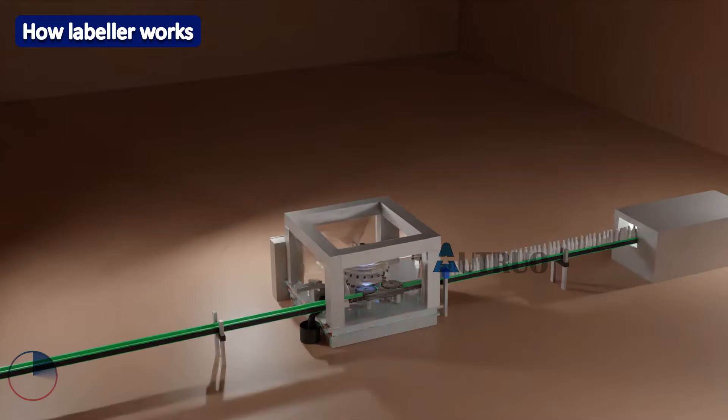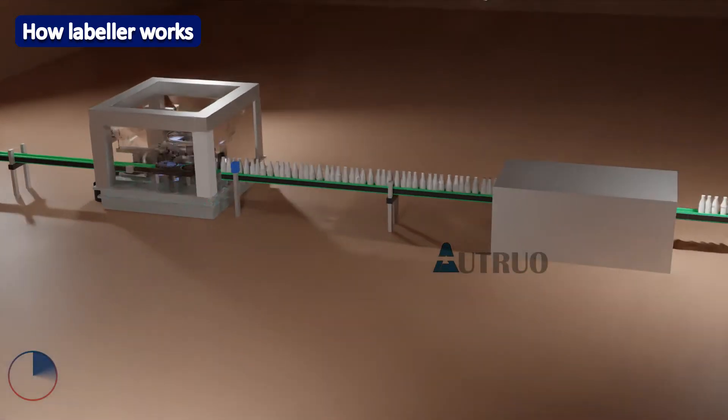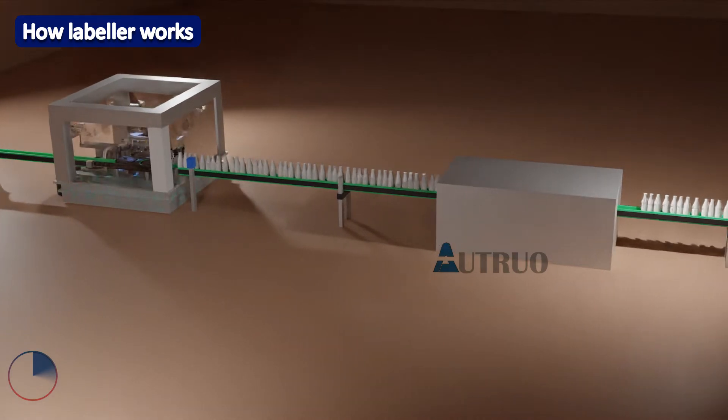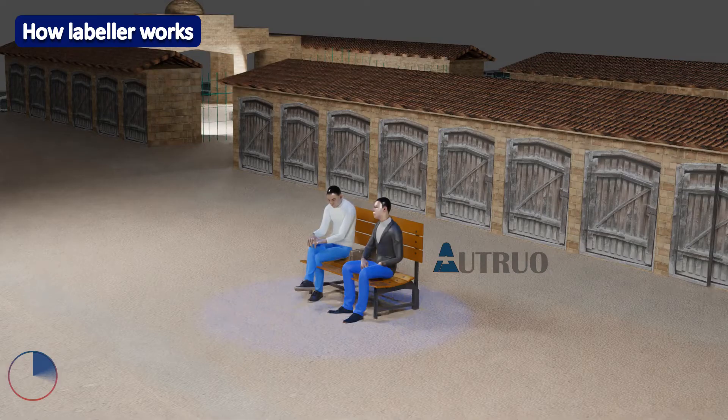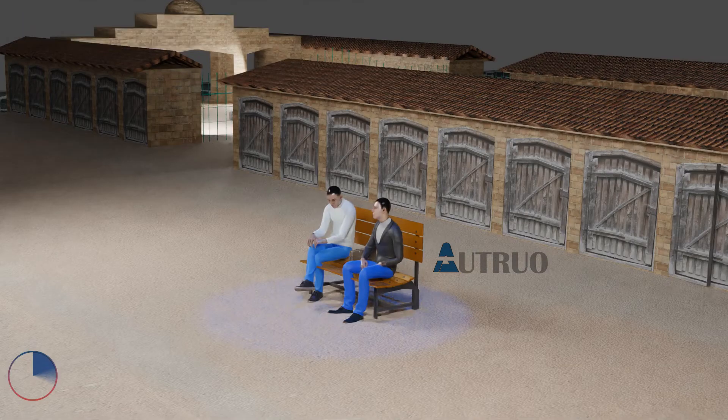The bottles can be PET or glass bottles. This machine is of different designs, but they all have the same working principles. Now let's look at a typical labelling setup on a packaging line.